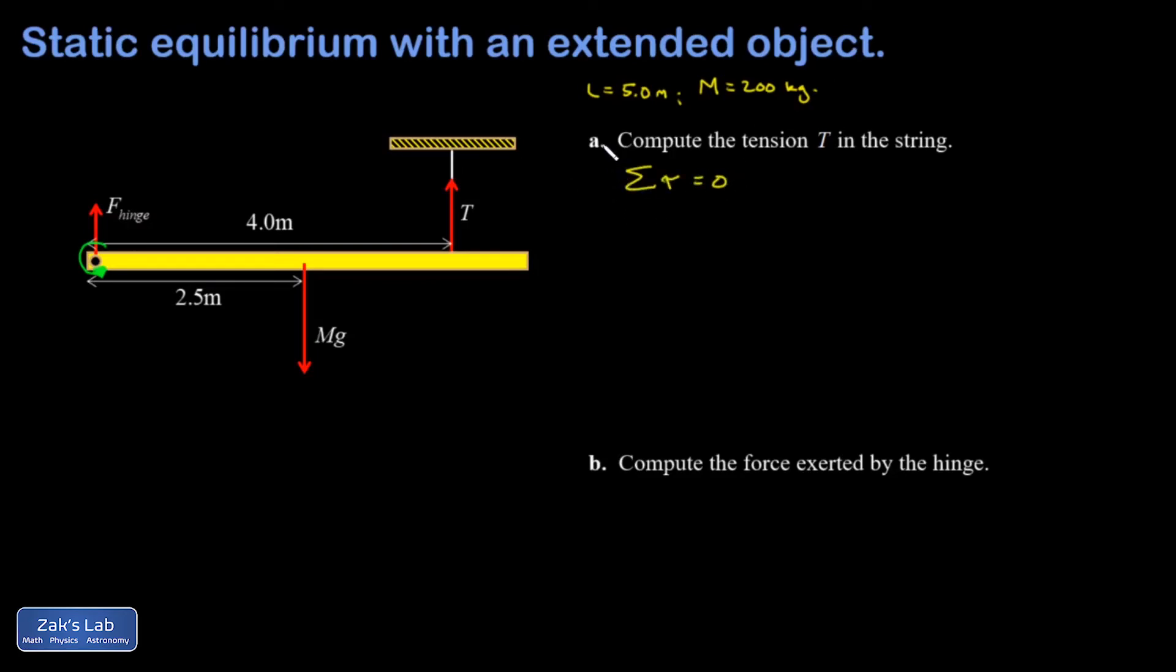So let's do a torque analysis around the left end. I know the net torque must add up to zero. Another way of saying that is any clockwise torque, if I add all those up, I should get the same total as if I add up all the counterclockwise torques. I'm using this green rotation axis here as my reference point for all the torques.